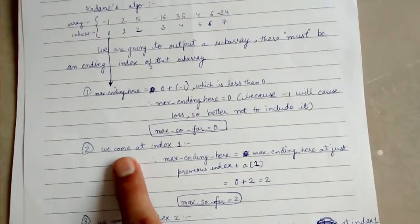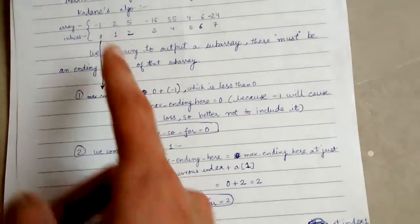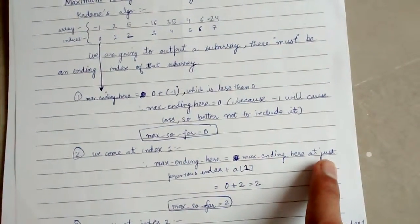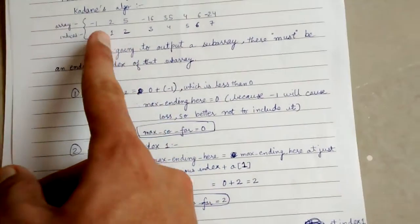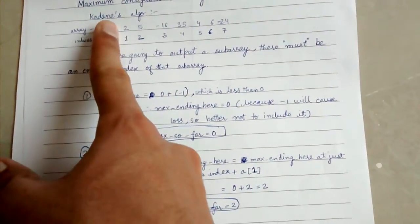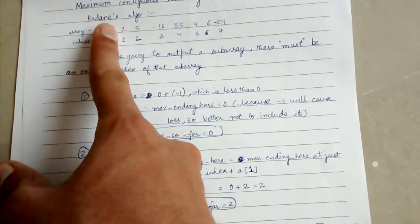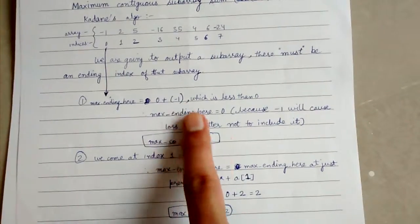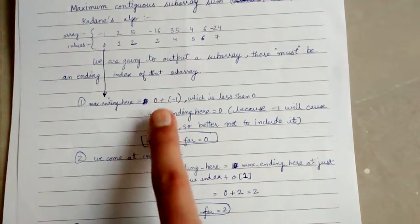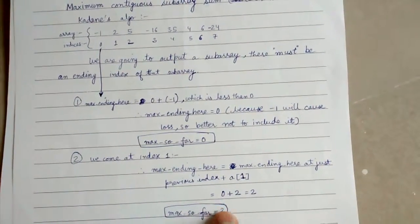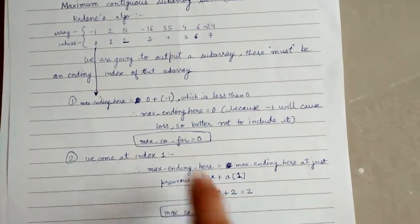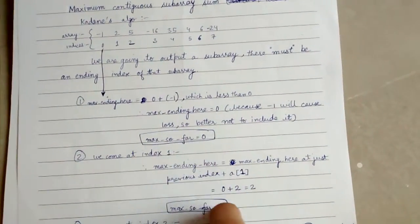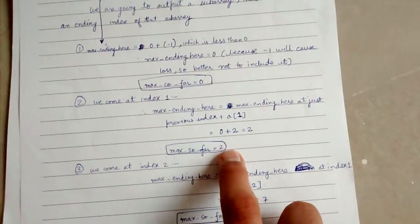Now we come at index 1. max_ending_here at the previous index was effectively zero because we don't extend a negative sum. So zero plus a[1] which is 2 gives us max_ending_here equals 2. max_so_far is the greater of 0 and 2, so max_so_far gets updated to 2.